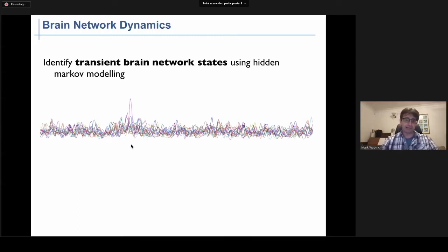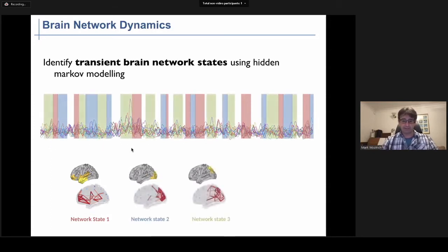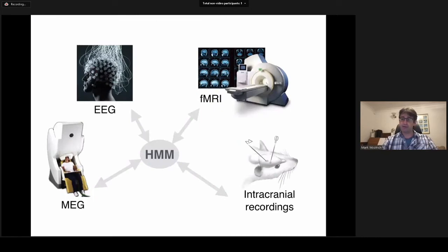This allows us to take data recorded from multiple brain regions in neuroimaging data, for example, and describe that data as a sequence of brain states where each state is characterized by a distinct functional brain network. Importantly, the HMM can find both what these networks look like and when these networks are activating in time. So this might be brain state one, and then at other points in time, the brain visits other network states where each one's characterized by its own distinct functional brain network.